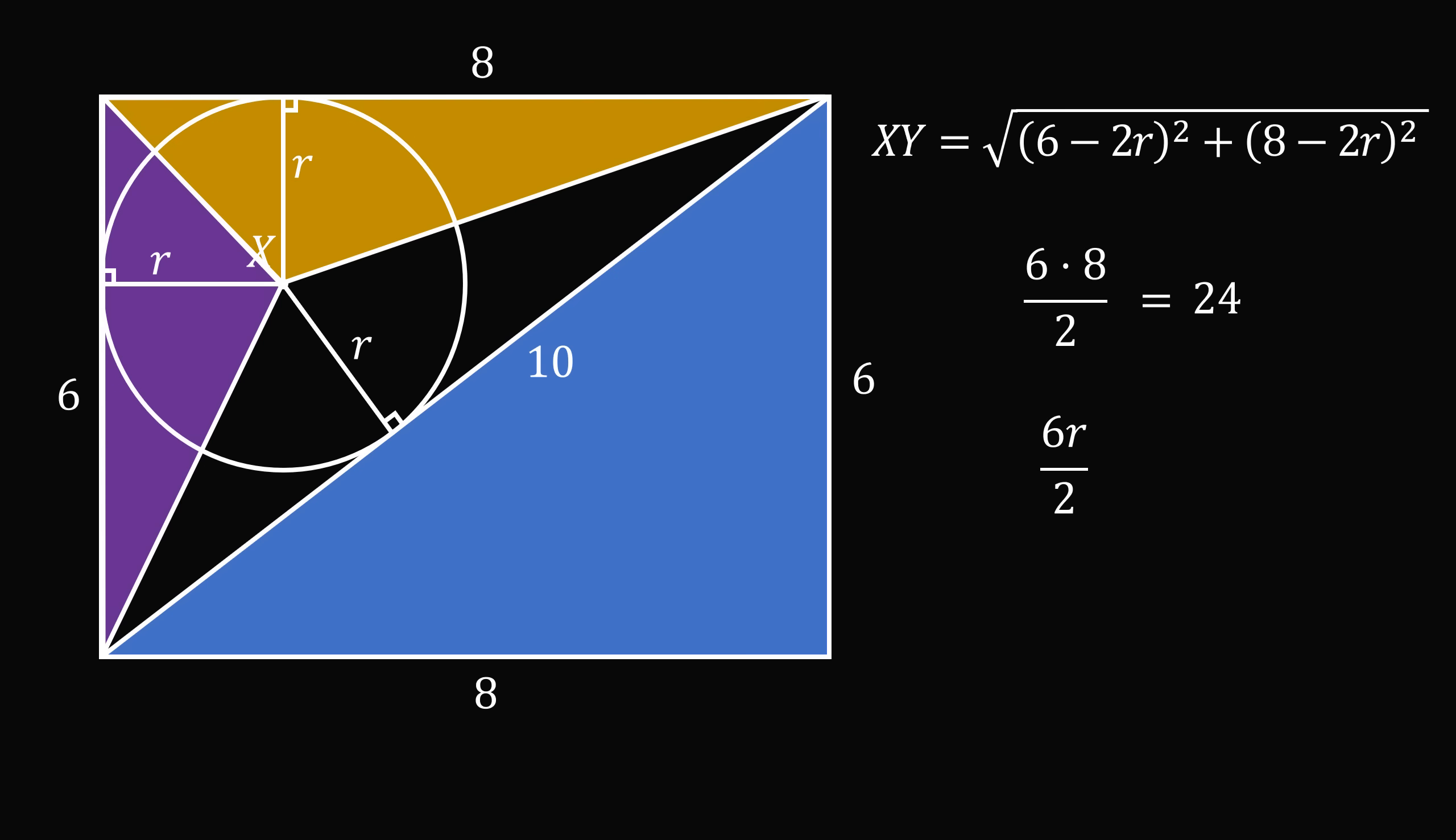This triangle has a base equal to 8 and a height equal to R, so its area is equal to 8R over 2.